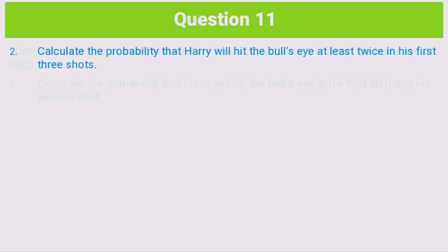Let's move on to question 2, which is slightly more difficult. Calculate the probability that Harry will hit the bullseye at least twice in his first 3 shots. This requires a bit more thinking. For 3 shots, a tree diagram might get quite big, so I prefer to keep things simple.